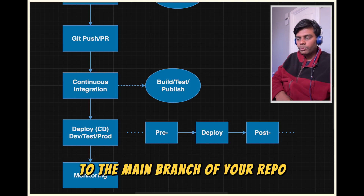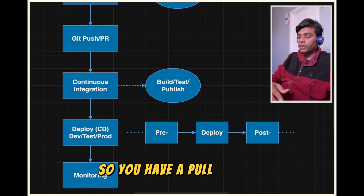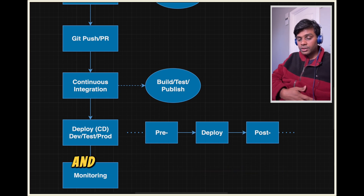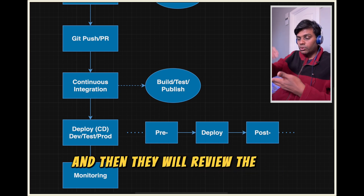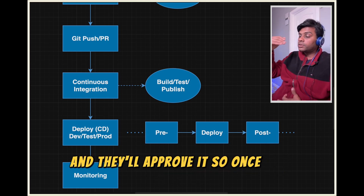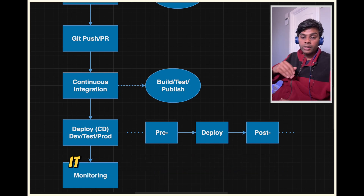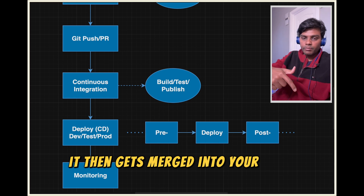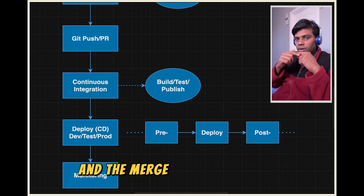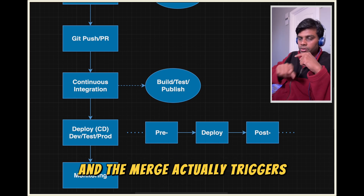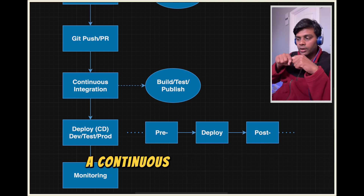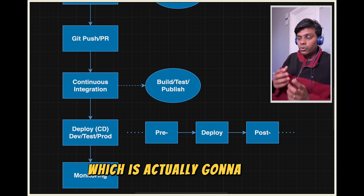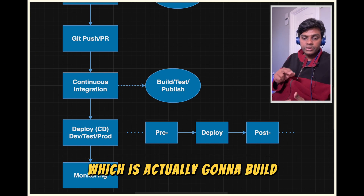They create a pull request to merge their changes into the main branch of the repo. The pull request goes to team members, who review the code changes and approve it. Once it is approved, it then gets merged into the main branch.